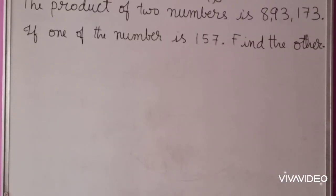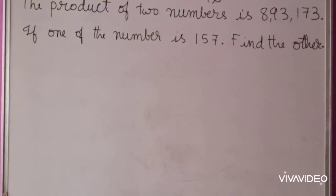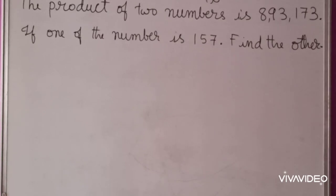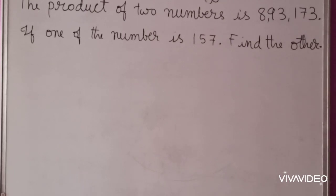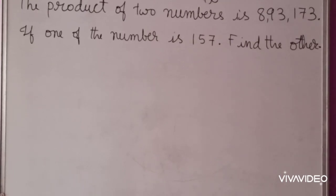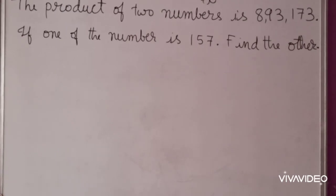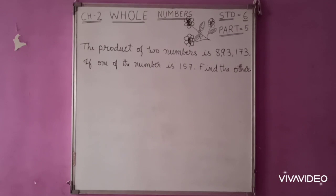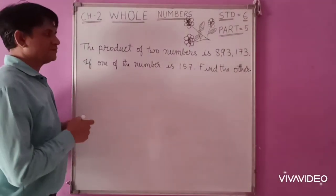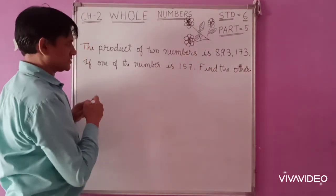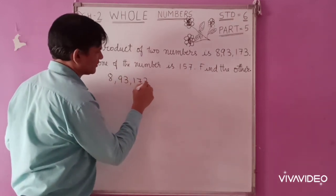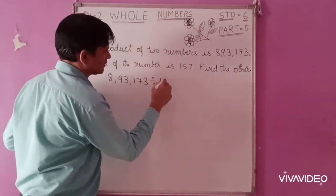Now here you can see the question: the product of two numbers is 8,93,173. One of the numbers is 157. Find the other. Now, how will you find the other number? To do this sum, you have to divide this number by this: that is 8,93,173 divided by 157.